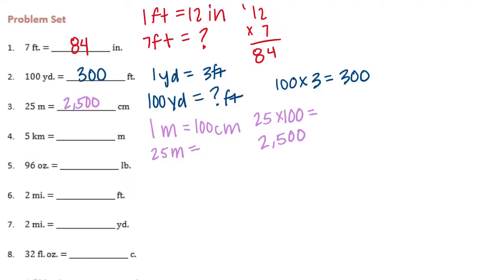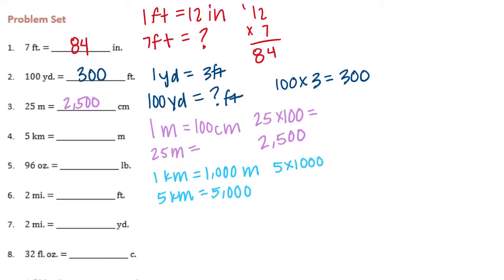5 kilometers is equal to how many meters? 1 kilometer is equal to 1,000 meters. So for 5 kilometers, we need to do 5 times 1,000 and we would get 5,000 meters.